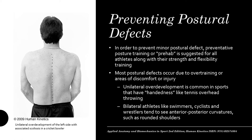It also matters whether you're a unilateral or bilateral athlete. Unilateral athletes have a handedness to their sport — like tennis or overhead throwing — where one hand does the work and the other is the counterbalance, leading to unilateral overdevelopment. For example, a cricket bowler has a severely overdeveloped left side of the body, particularly in the upper back. Bilateral athletes — such as swimmers, cyclists, and wrestlers — tend to see anterior-posterior curvature like rounded shoulders, where overdevelopment in the chest or back causes the shoulders to round.